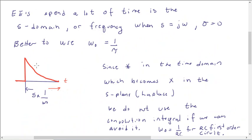Now, here's the thing. Even though we started you off in your circuits course in time domain, and in 110 we started off in time domain convolution, we actually spend a lot of our time in the S domain, or frequency when S equals J omega. More about that later. We just set the real part equal to zero. It's going to be better to use omega-naught equals 1 over tau. Because we're going to be talking about things in frequency anyway.